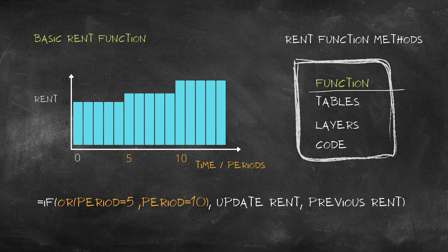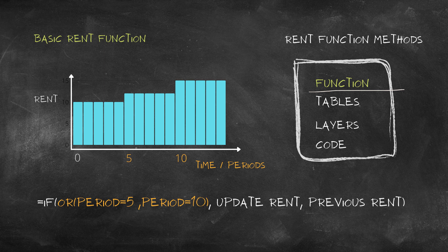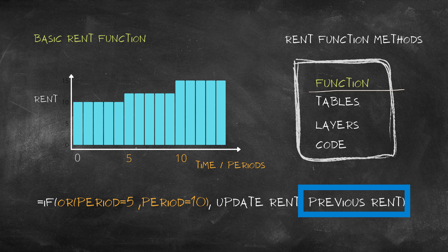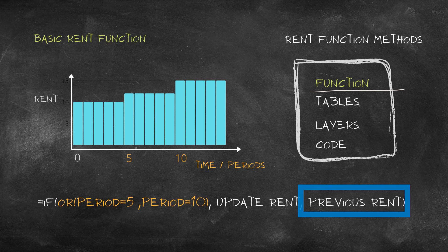If either of these are true, the OR function will return true, and the IF function will be triggered to update the rent. If neither of these are true, the IF function will default to its false value, which in this case is the same rent collected as in the previous period, which means the rent hasn't changed.